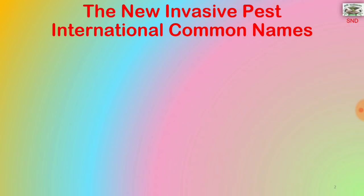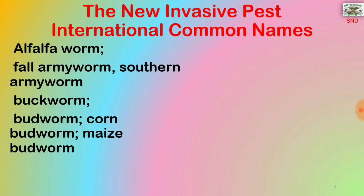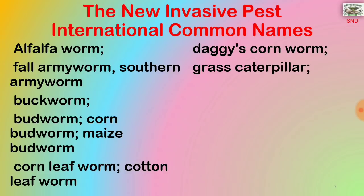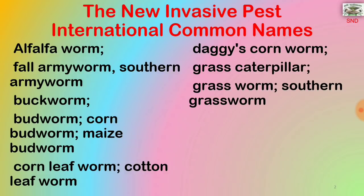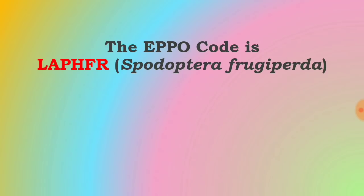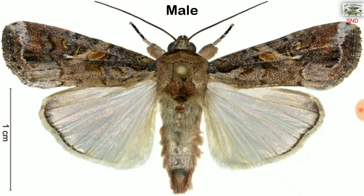This new invasive pest does have some international common names: alfalfa worm, fall army worm, southern army worm, buck worm, bird worm, corn bird worm, maize bird worm, corn leaf worm, cotton leaf worm, daggies, corn worm, grass caterpillar, grass worm, southern grass worm, overflow worm, rice caterpillar, wheat cut worm and whirl worm. The EPPO code is LAPHFR for Spodoptera frugiperda.